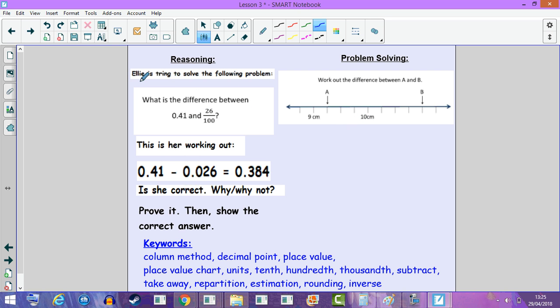Reasoning and problem solving. Ellie is trying to solve the following problem: what is the difference between 0.41 and 26 over 100? This is her working out. Is she correct? Why or why not? In this question, you need to be able to prove it, then show the correct answer.